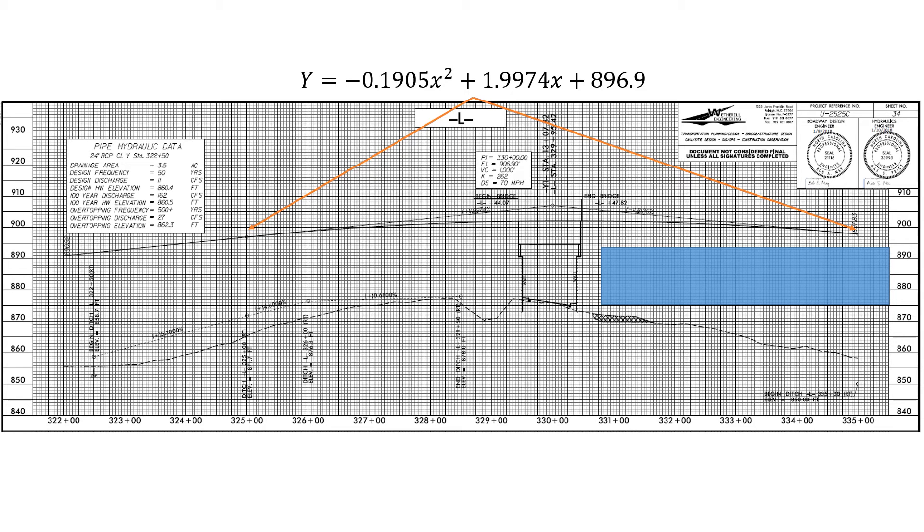Summarizing what we solved for this vertical curve, we've got our equation that tells us and describes the elevation Y for any point X between the PVC and the PVT. We can't use this equation for anything that extends beyond those points.